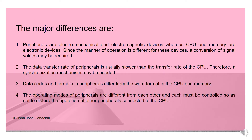Now let's see the differences between peripheral devices and the CPU. Peripherals are electromechanical and electromagnetic devices, whereas CPU and memory are electronic devices. This is one of the major differences. Since the manner of operation is different for these devices, a conversion of signal values may be required — that is the main reason why we go for interfacing.